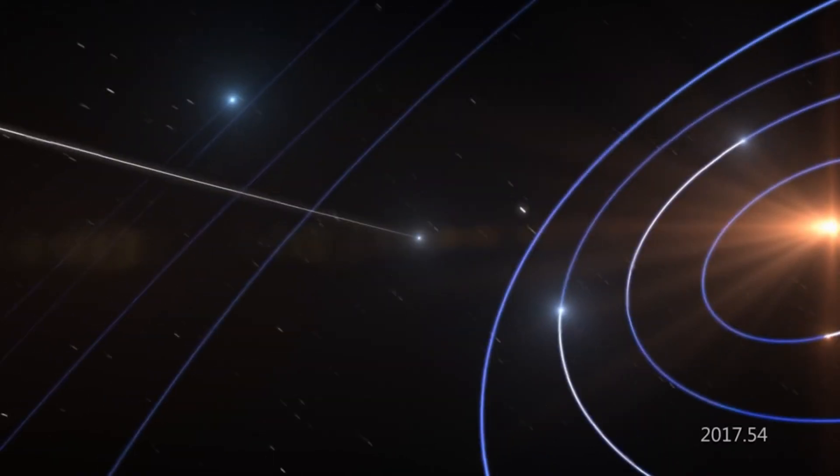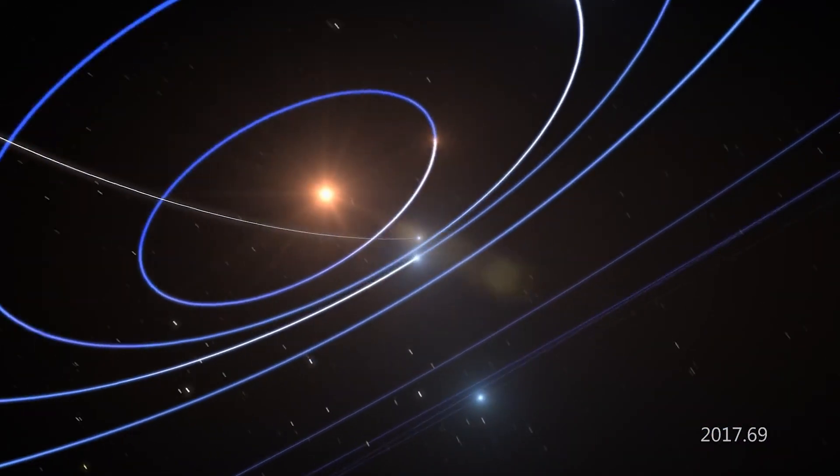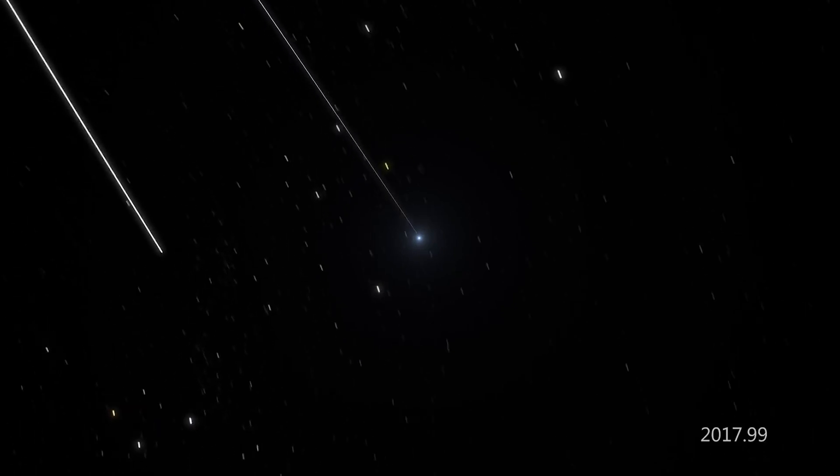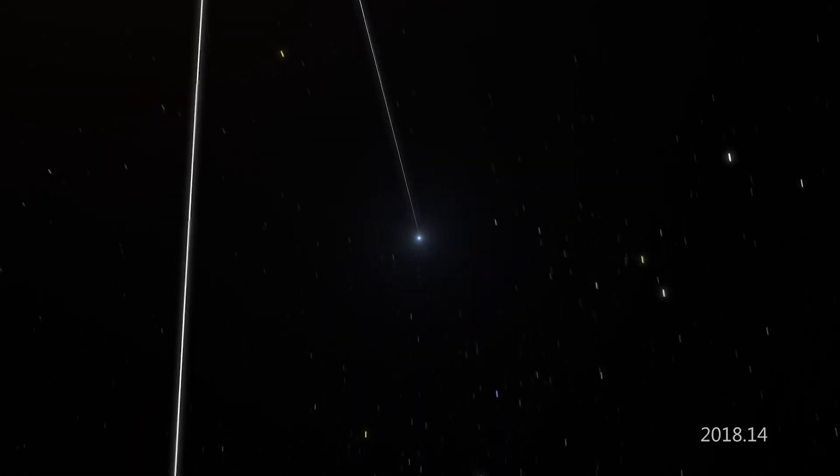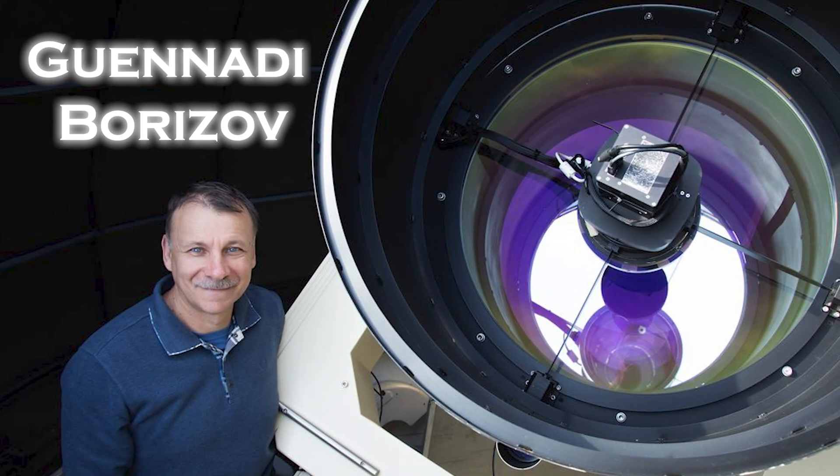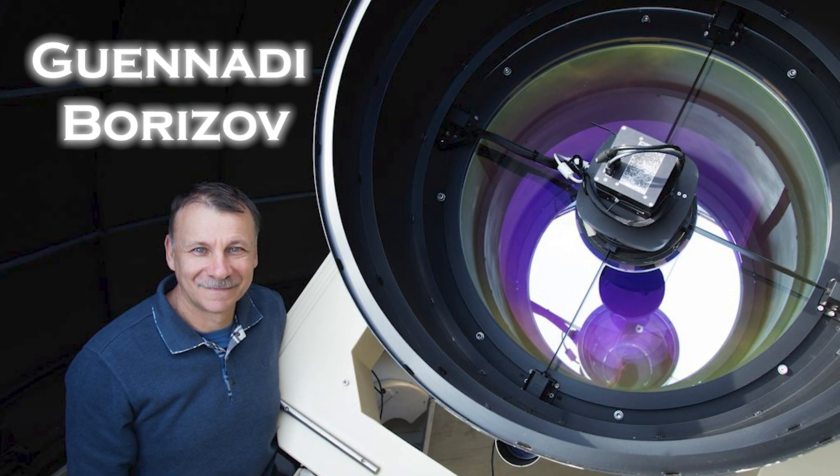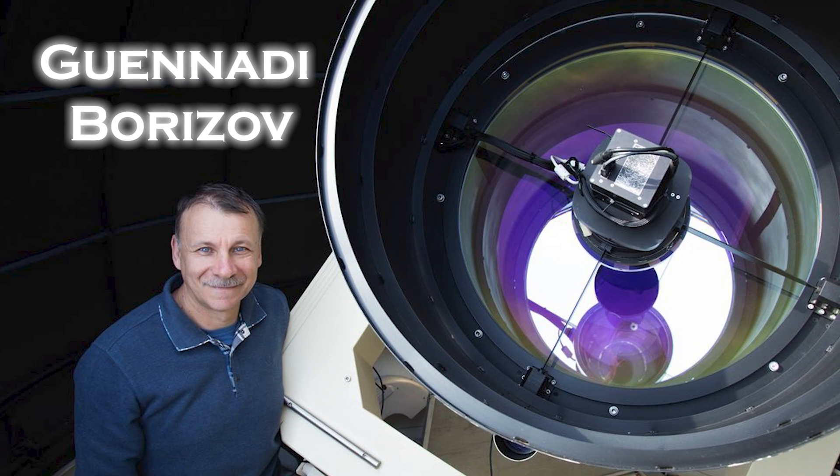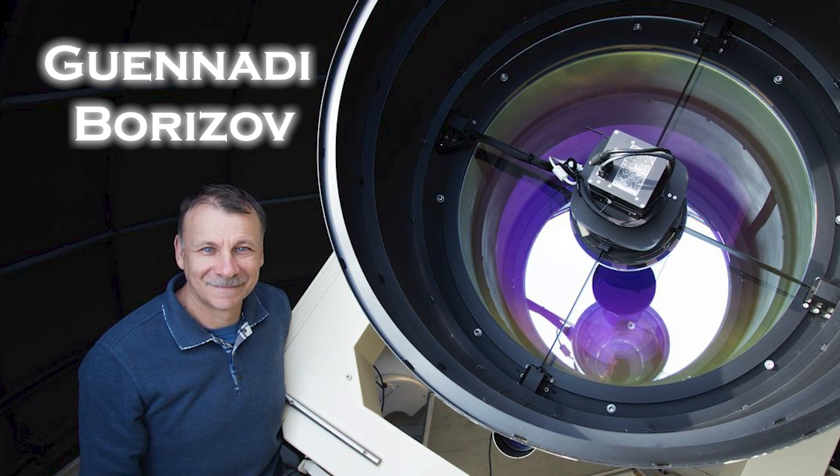Just as astronomers were beginning to recover from the shock and confusion caused by the arrival of the first unexpected visitor, another event occurred. Another one appeared. Yenari Borisov, an amateur engineer and amateur astronomer, observed a moving object in the pre-dawn sky from his personal observatory in Crimea.